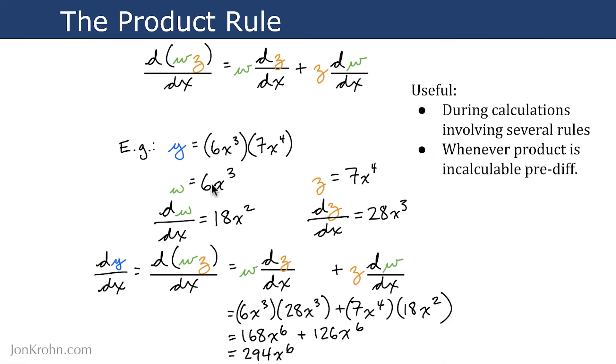So 6x cubed, let's call that w. And then the second part of the product here, 7x to the power of 4, we'll call that z.